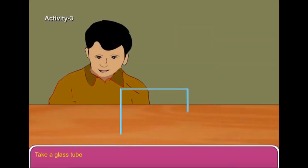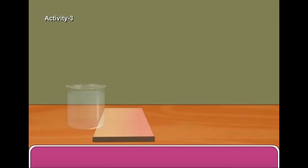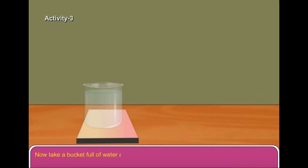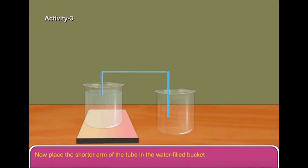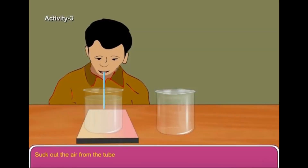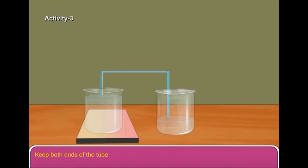Take a glass tube with two bends. Take a bucket full of water and keep it at a higher place. Take another empty bucket and keep it at a lower place. Place the shorter arm of the tube in the water-filled bucket and the longer arm in the empty bucket. Suck out the air from the tube and fill it with water. Keep both ends of the tube dipped in the water. The water starts flowing into the empty bucket.